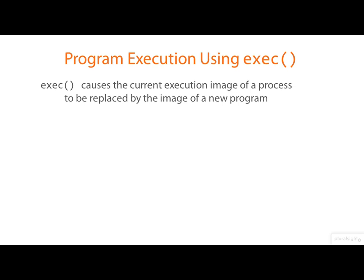We know how to create new processors and how to get two actors standing on the stage reading from the same script. But very often we want one of those processors, usually the child, to go and execute a different program. For this we need one of the exec family of system calls. Basically, exec causes the current execution image of a process to be replaced by the image of a new program.